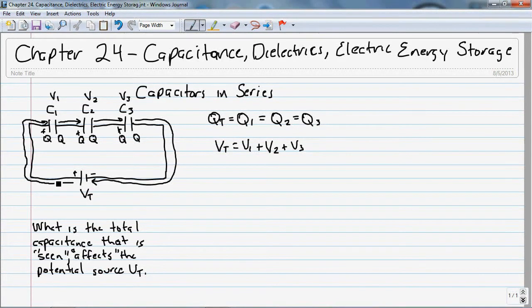It just sees the total effect of all three of those capacitors, and so it's going to see what it considers to be a lump capacitance connected to it. And what we want to find is what is the capacitance across, we're going to call that CT, the total capacitance.